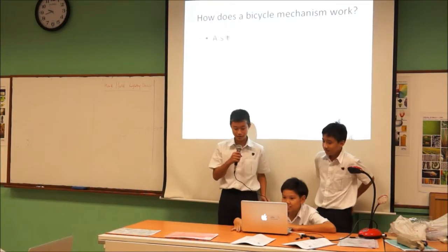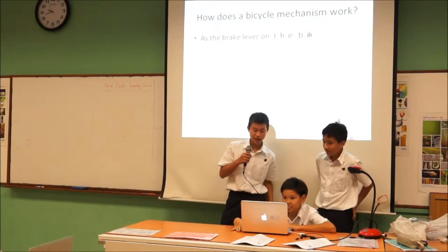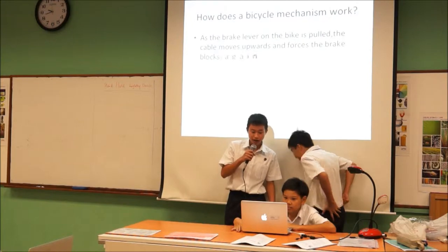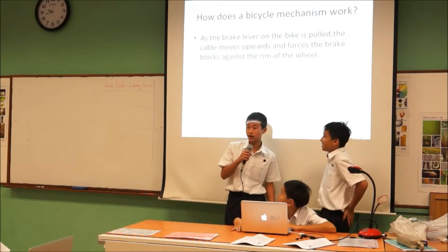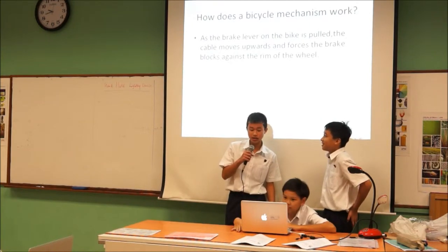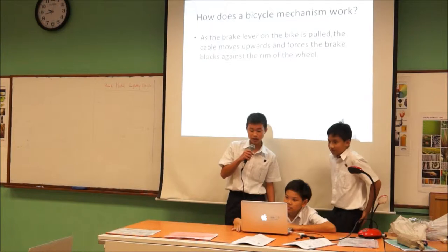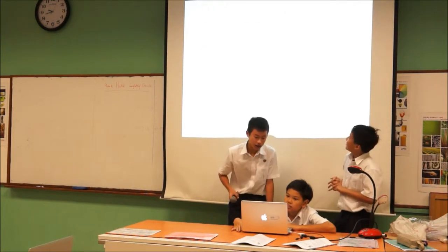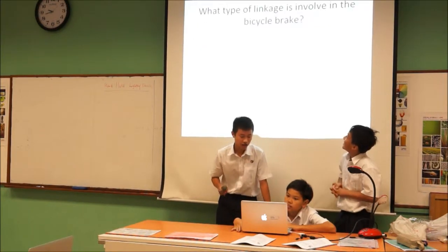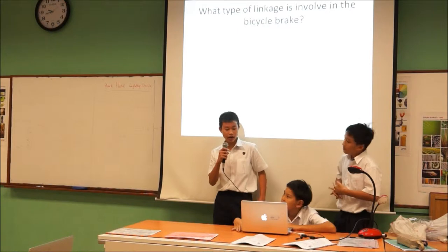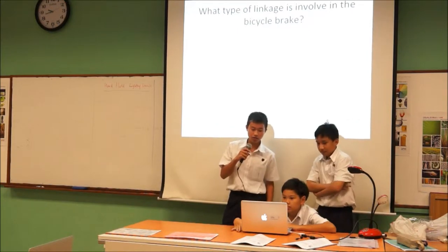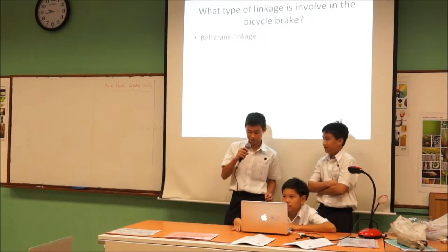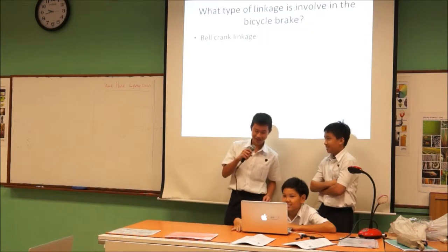How does the bicycle mechanism work? As the brake lever on the bike is pulled, the cable moves upwards and forces the brake block against the rim of the wheel. What are the types of linkage involved on bicycle brakes? Bell crank linkage.